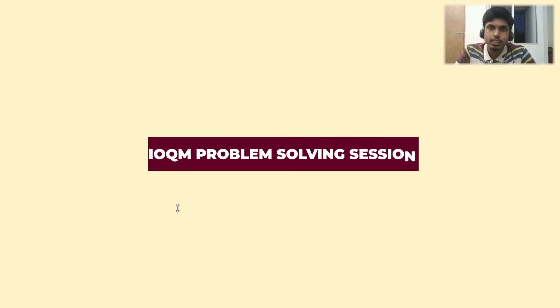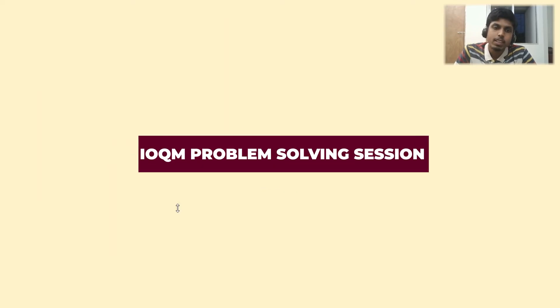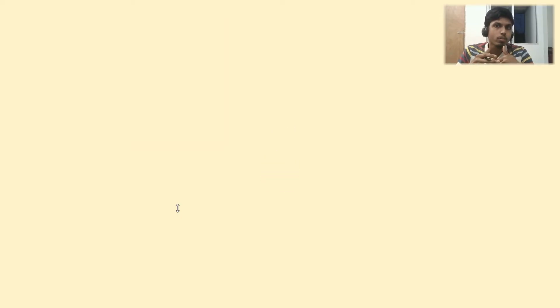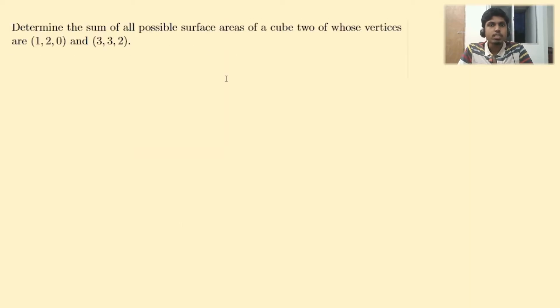Welcome to IOQM problem solving session. Today we are going to solve a problem from IOQM 2024. Let's start with problem 7. We are asked to determine the sum of all possible surface areas of a cube.